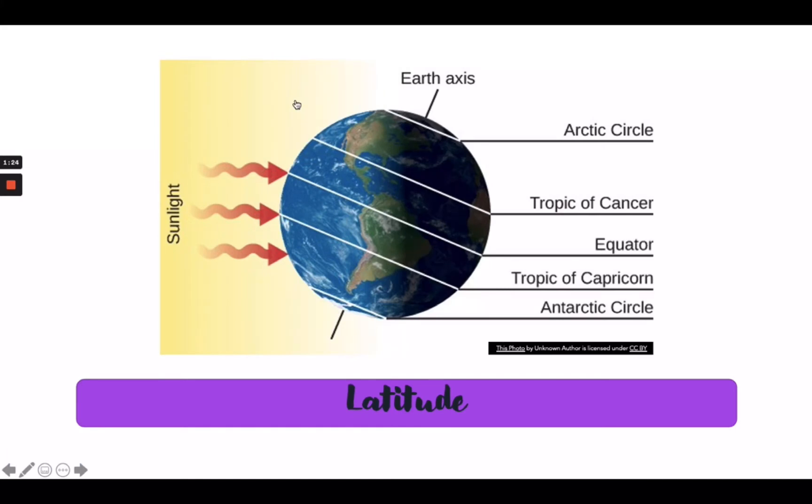Latitude refers to the angular distance of a place north or south of the Earth's equator. Places located at high latitudes far from the equator receive less sunlight than places at low latitudes close to the equator. A great factor in the distribution of sunlight is the shape and tilt of the Earth.